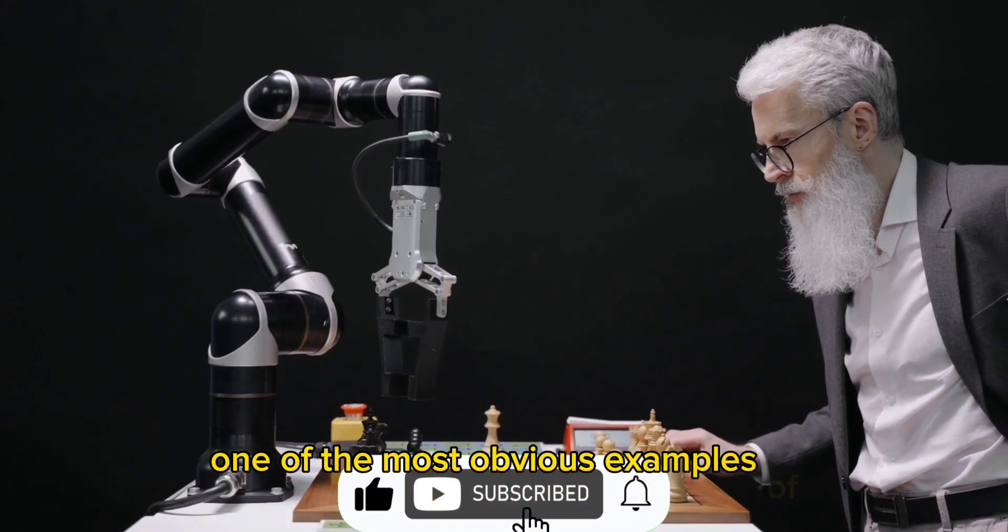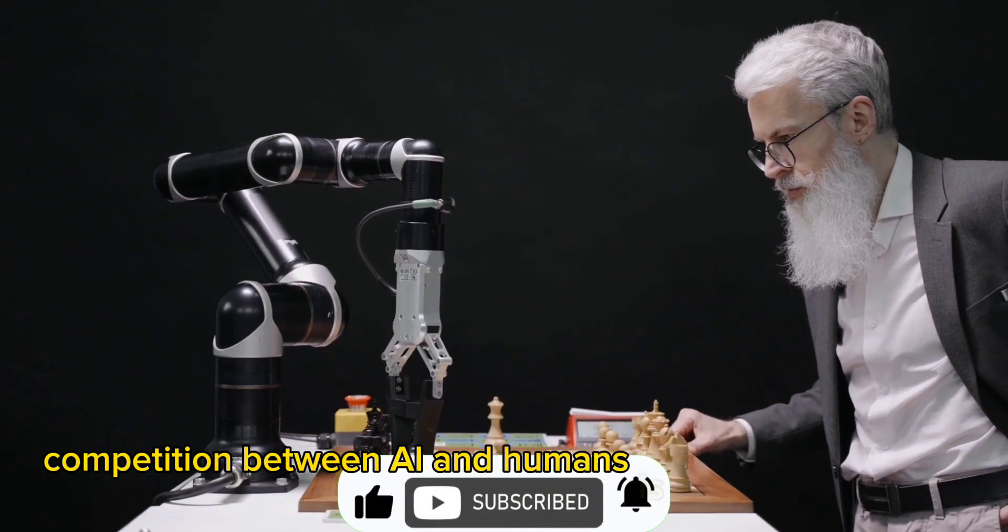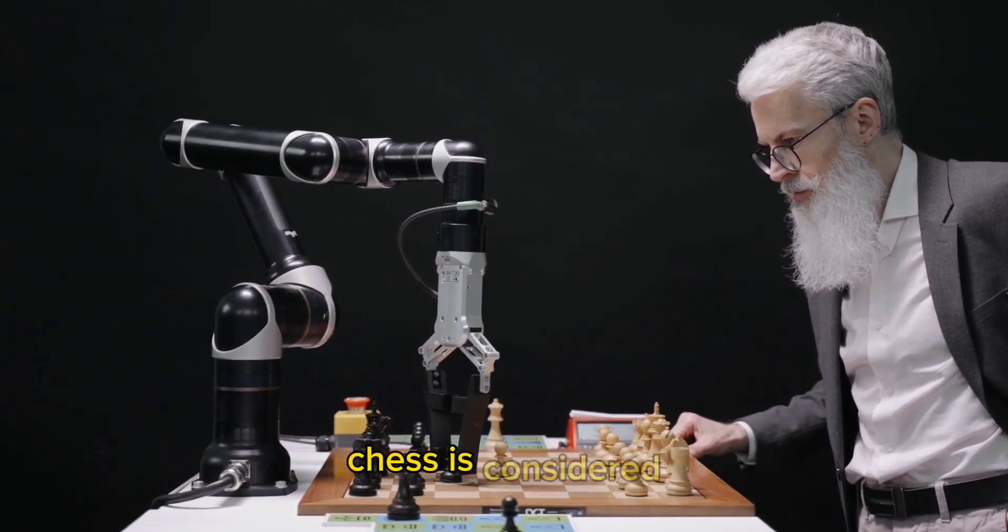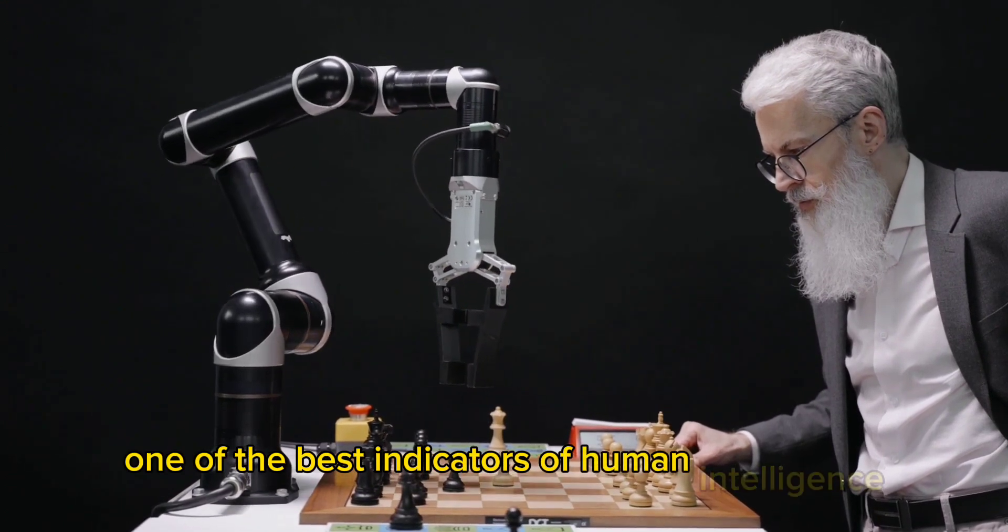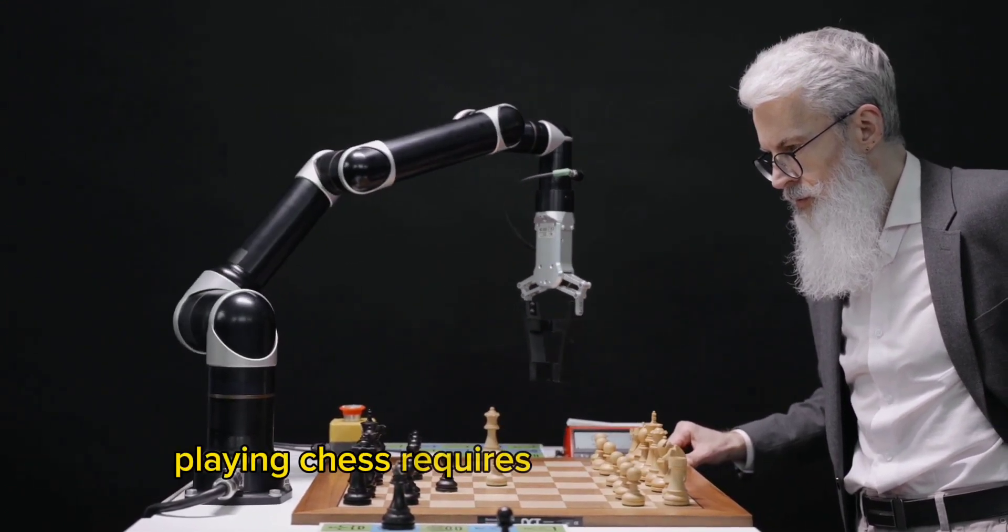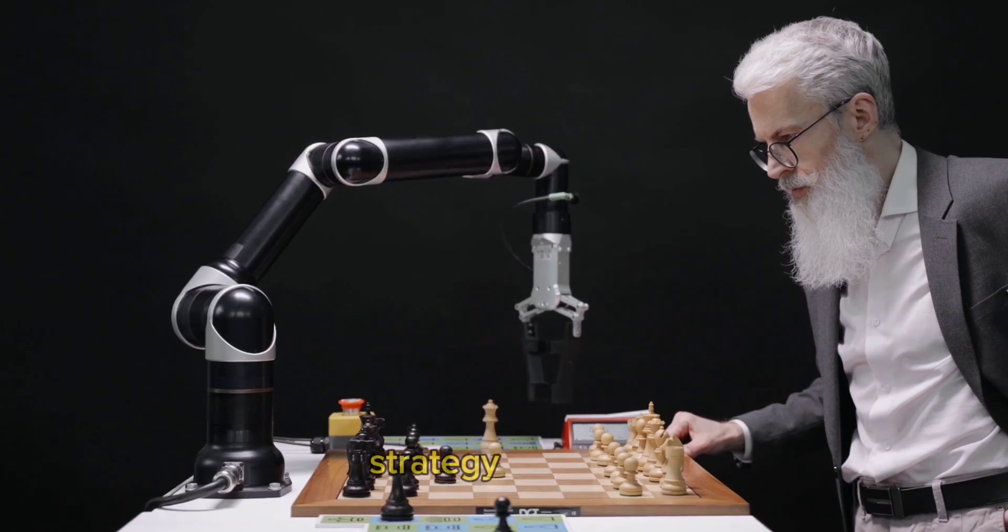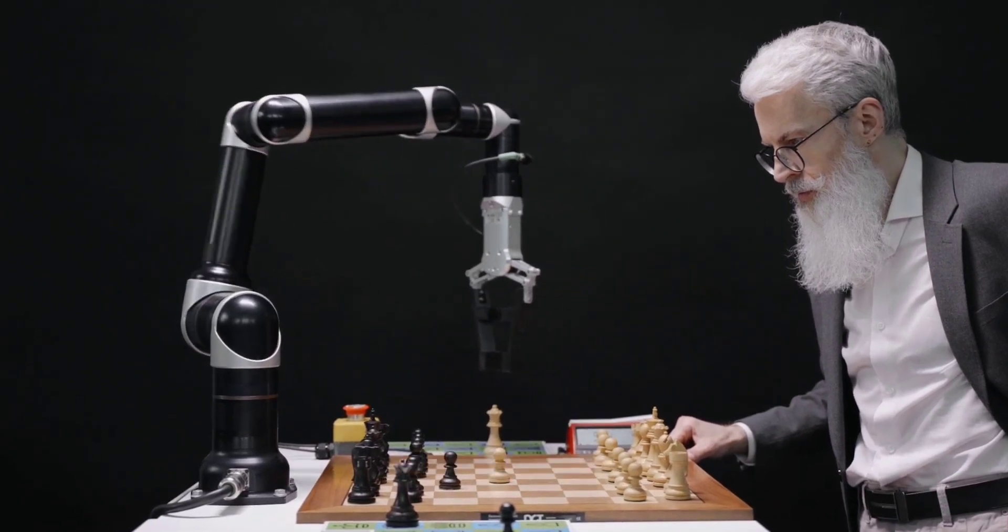One of the most obvious examples of competition between AI and humans is the game of chess. Chess is considered one of the best indicators of human intelligence. Playing chess requires skills such as logic, strategy, memory, and creativity. It takes years of practice to master chess.